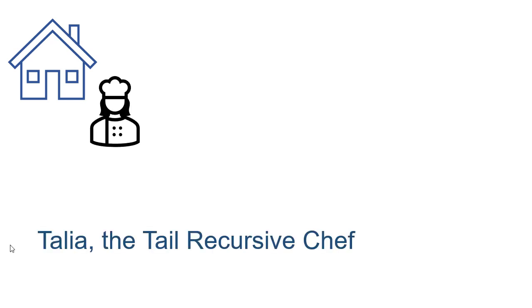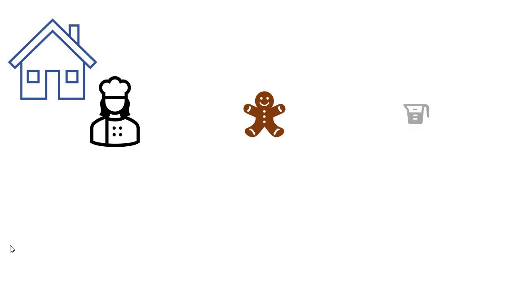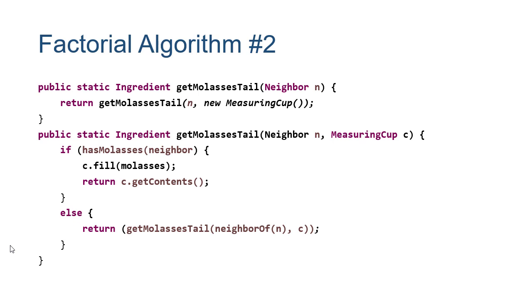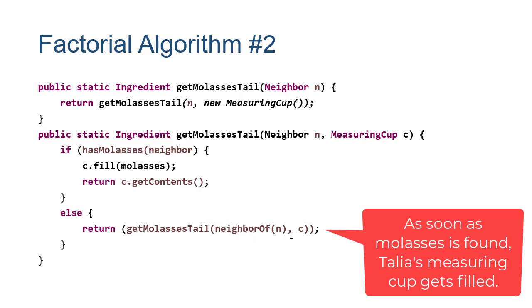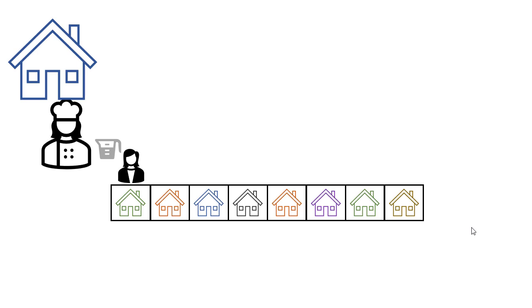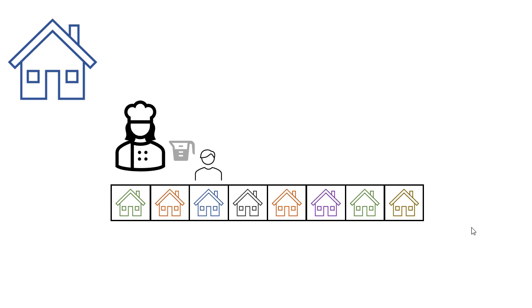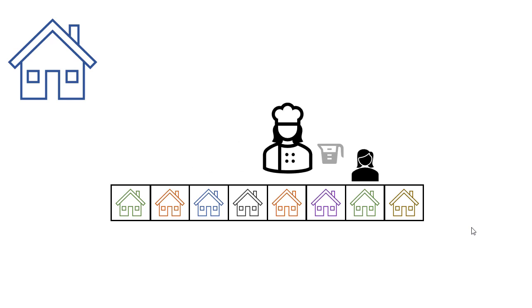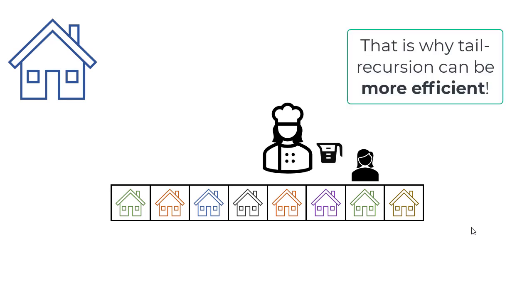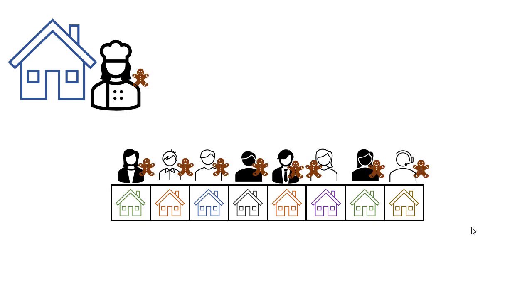The other chef is Talia, the tail recursive chef. She also needs molasses, but her process is different. Her get_molasses_tail method has a measuring cup as a parameter. She takes the cup along and walks directly to the neighbor who has molasses, fills the cup there, and goes directly home. She doesn't have to wait for neighbors to pass it back house to house. Talia can go straight home, make gingerbread cookies, and share them with the entire neighborhood.